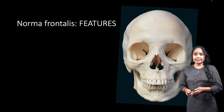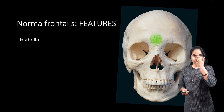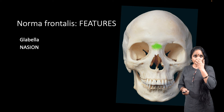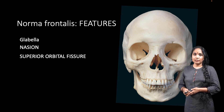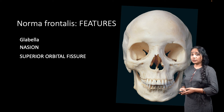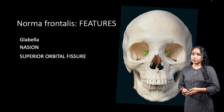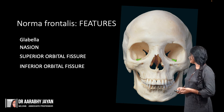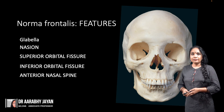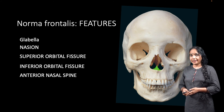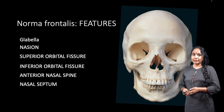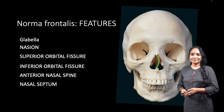Looking at other landmarks of the norma frontalis: we have the glabella, which is the point between your two eyebrows, and then we have the nasion, which is the depression immediately before the bulging of the nose. We also have the superior orbital fissure, seen within the orbital cavity, as well as the inferior orbital fissure. We have the anterior nasal spine in the midline, and projecting up from the anterior nasal spine we have the bony nasal septum.